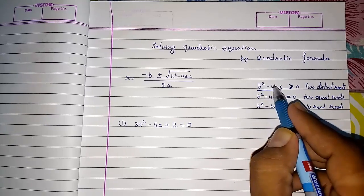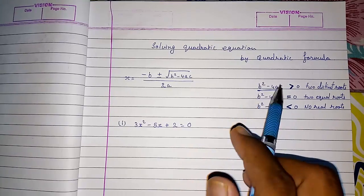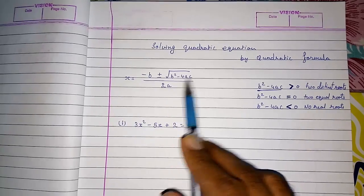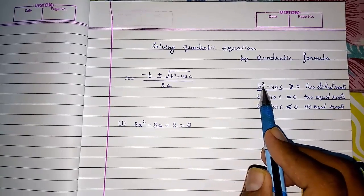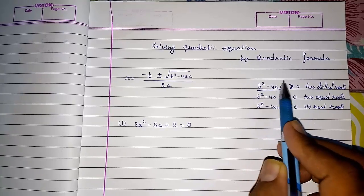With the help of this b square minus 4ac we will come to know whether we will get zeros or not. Directly we come to know. So no need of solving this directly. First we are going to solve this b square minus 4ac. It is called discriminant.